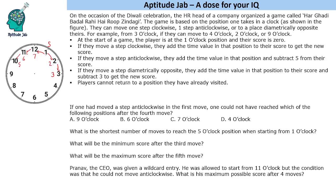If you move diametrically opposite, you add the time value of that position and subtract three. So going from one to seven gives you seven minus three, which is four points. Going from two to eight gives five points. Going from eleven to five gives two points. That is the scoring pattern of the game.